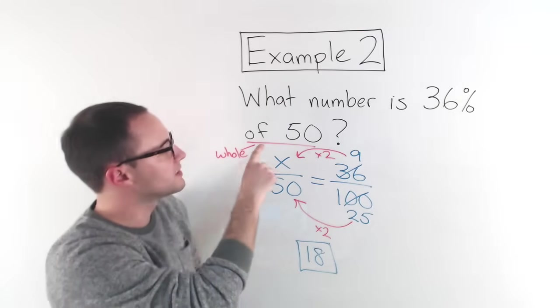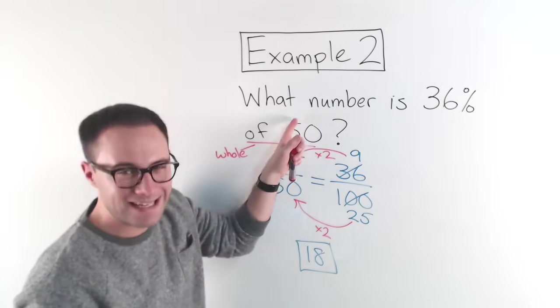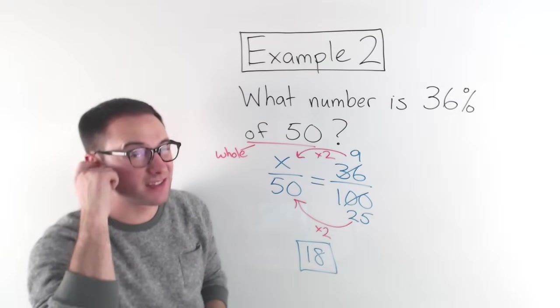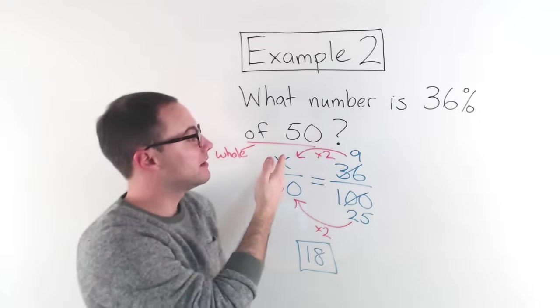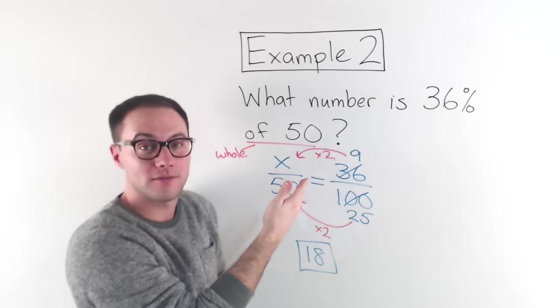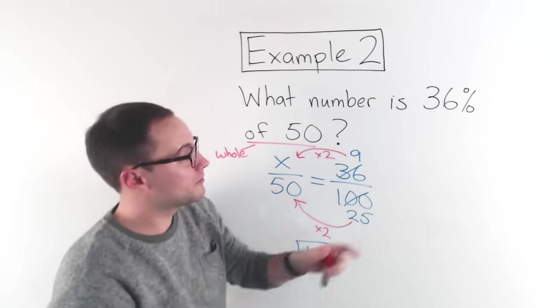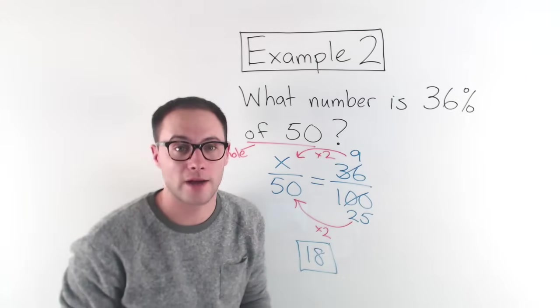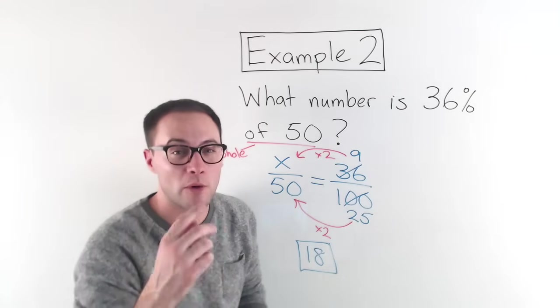So what number is 36% of 50? 18 is 36% of 50. And that makes sense. 25 is 50% of 50, right? So 36 is less than that. So you would expect that number to be less than 25. So that makes sense. Let's try one more example.